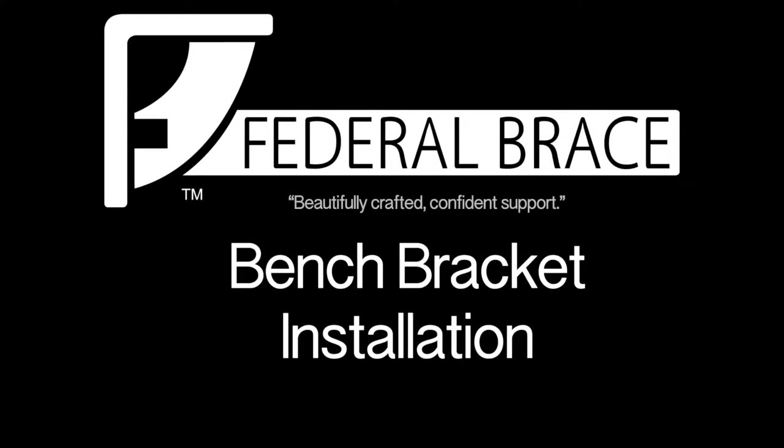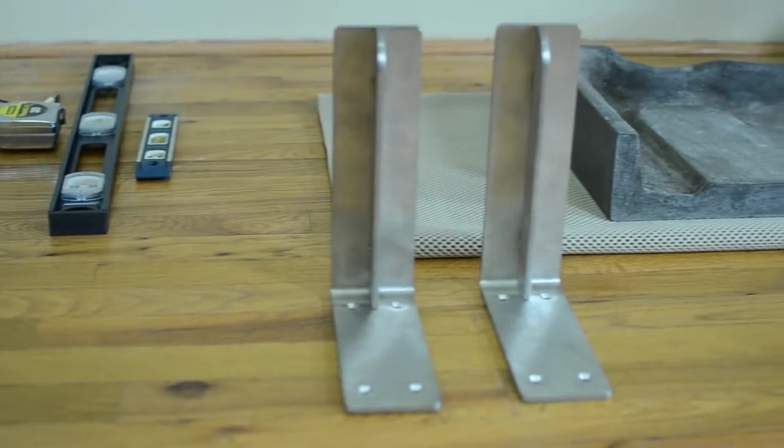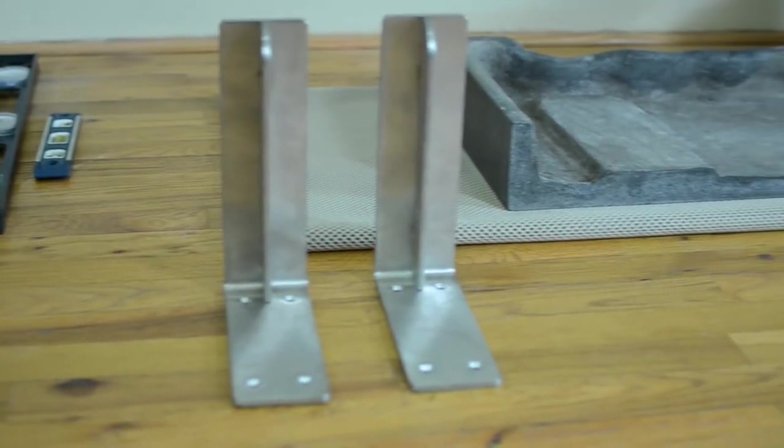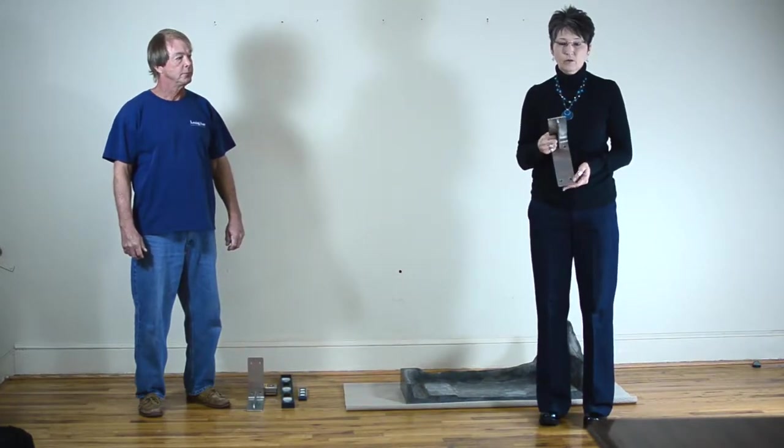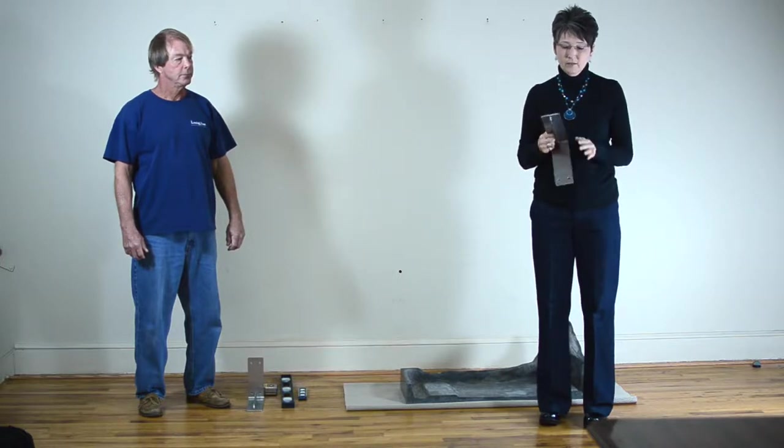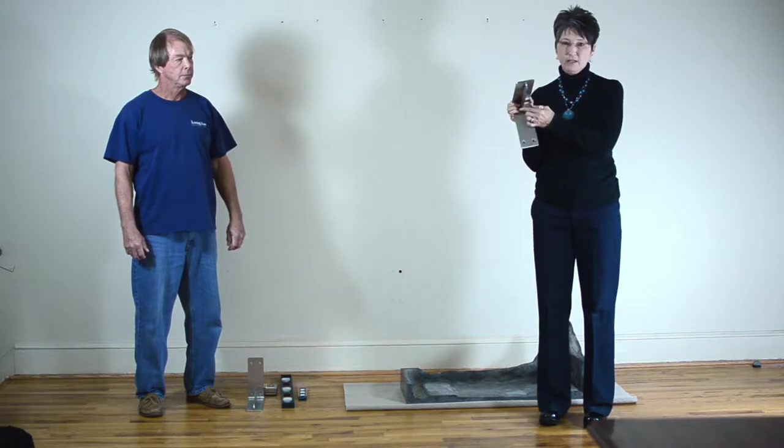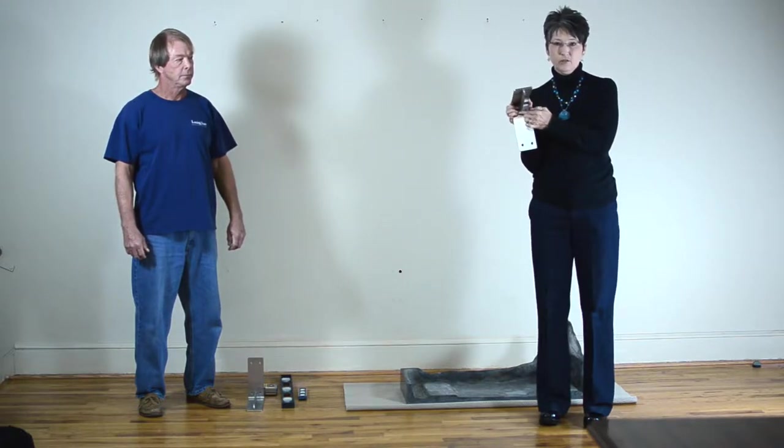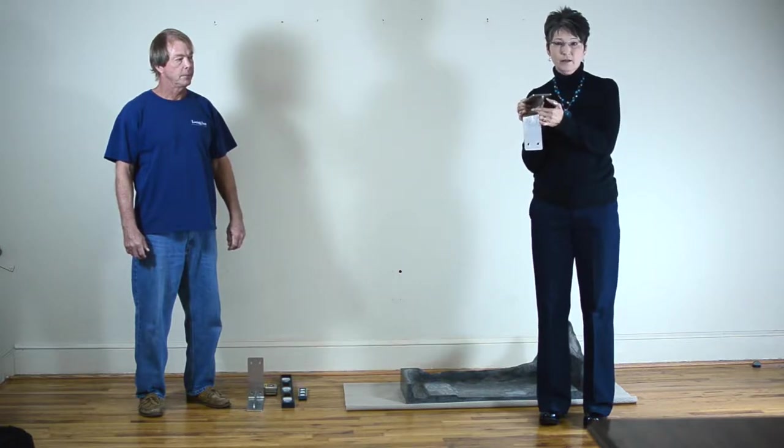Welcome to another series in the installation videos for Federal Brace. Today we're going to be installing one of our new bench supports. This particular bench support can be used in an indoor or outdoor setting for a bench in your shower or for a seating bench outside. It's stainless steel, the flanges are three inches wide and it has a low profile gusset that's going to give you the additional support you need when supporting the weight of a bench and a person.